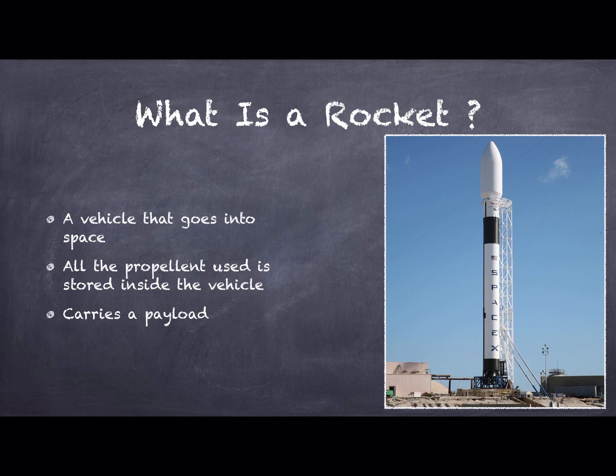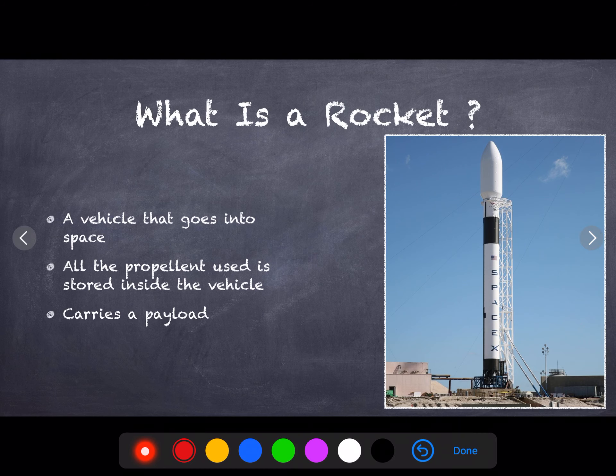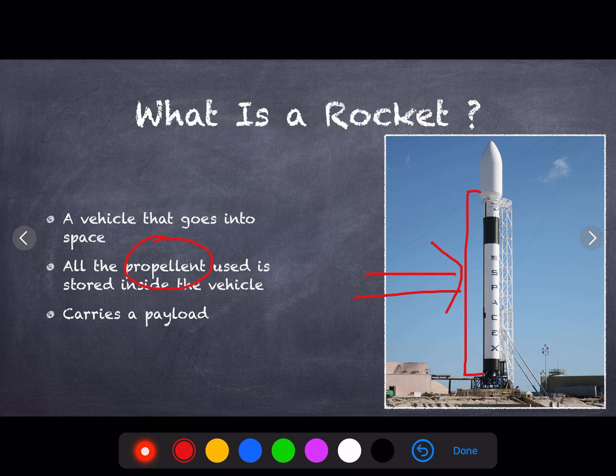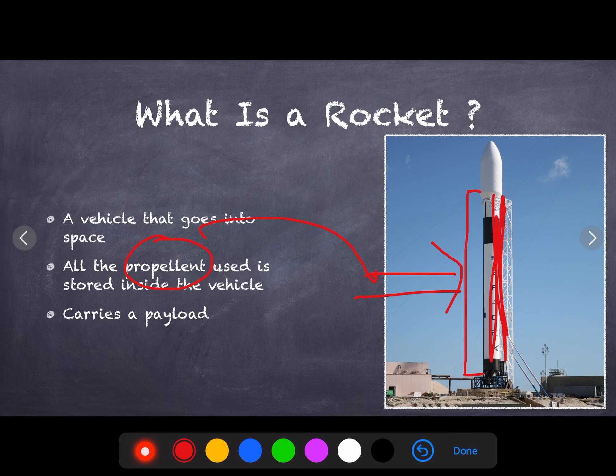does. Now a rocket is basically 90-99% just the fuel or propellant part. This part which I am marking with the red pen you can see right here is basically the whole propellant section. All the propellant is stored in this part only, and you can see it's the majority of the height of the whole rocket.